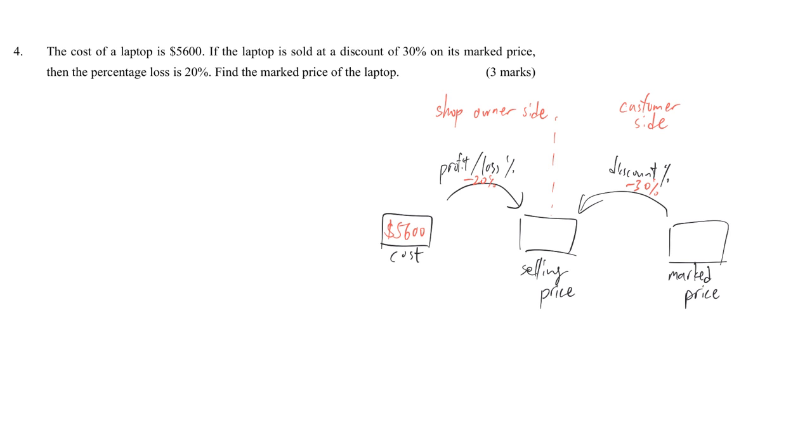So we just write down from the cost, and then we deduct 20% from the original one time. Then it will give us the selling price. Now the cost is given, so we replace the item cost by $5,600. Therefore, we get the selling price is $4,480.